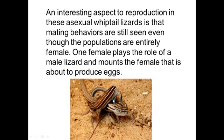Here's what happens: when the estrogen level is low, the female takes on the role of a male. There is no exchange of genetic material, but she goes through courtship rituals and mounts another female, causing a spike in that female's estrogen levels and causing her to ovulate. Those eggs then grow and become adult females, but she will not ovulate unless mounted by another female.